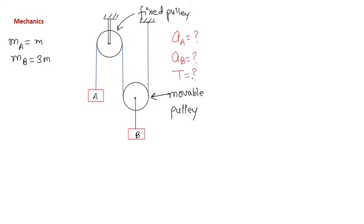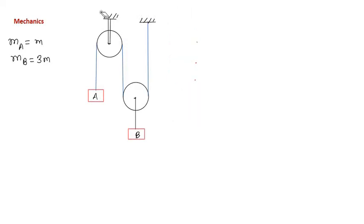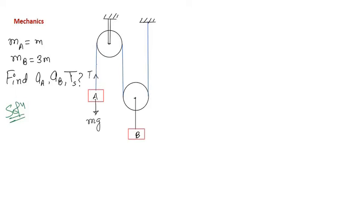Now we will solve this problem. First, let us draw the forces on these blocks. The mass of block A is m, so the gravitational force is mg downward. The tension in the string attached to the fixed pulley is T, and this same tension T appears in all segments of that rope.